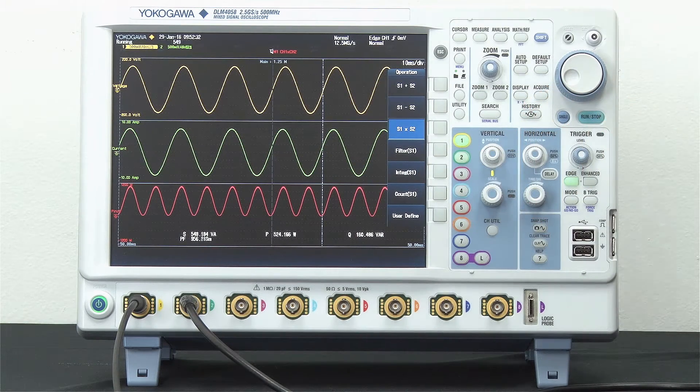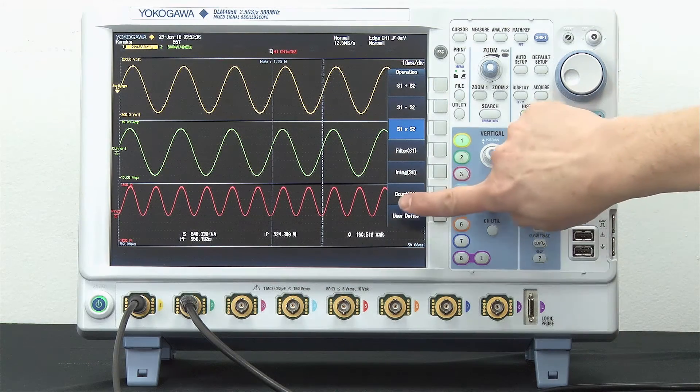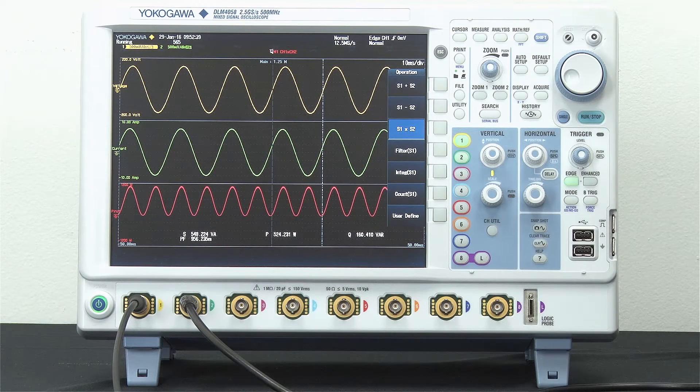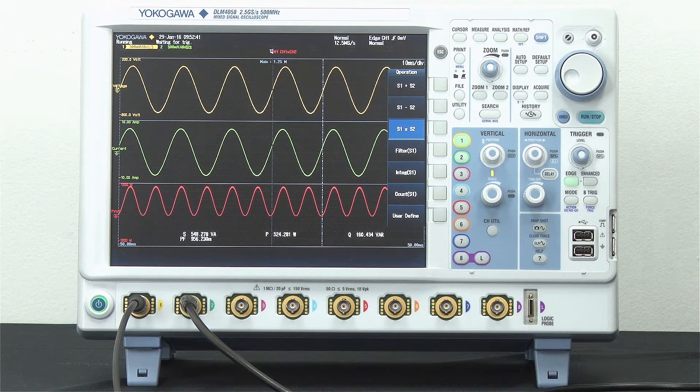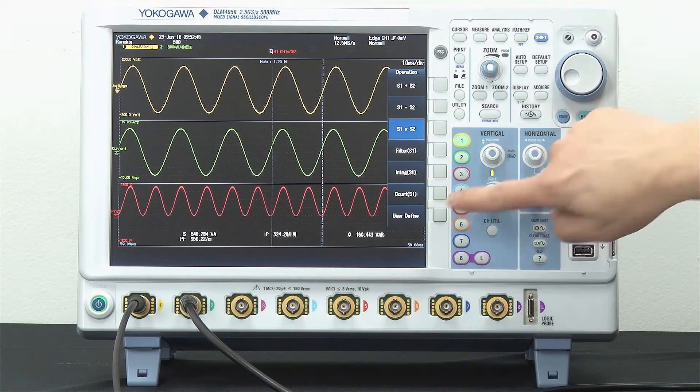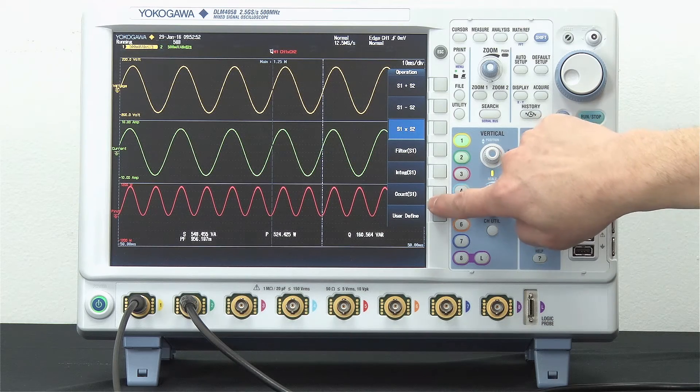For today's demonstration, I'm going to use the math feature to multiply voltage times current and this yields an instantaneous power waveform. Again, this is a simple channel one times channel two type math. The multiplication operation is a standard feature. So there's my waveform. This is the simple product of the voltage and current waveforms, also seen here.